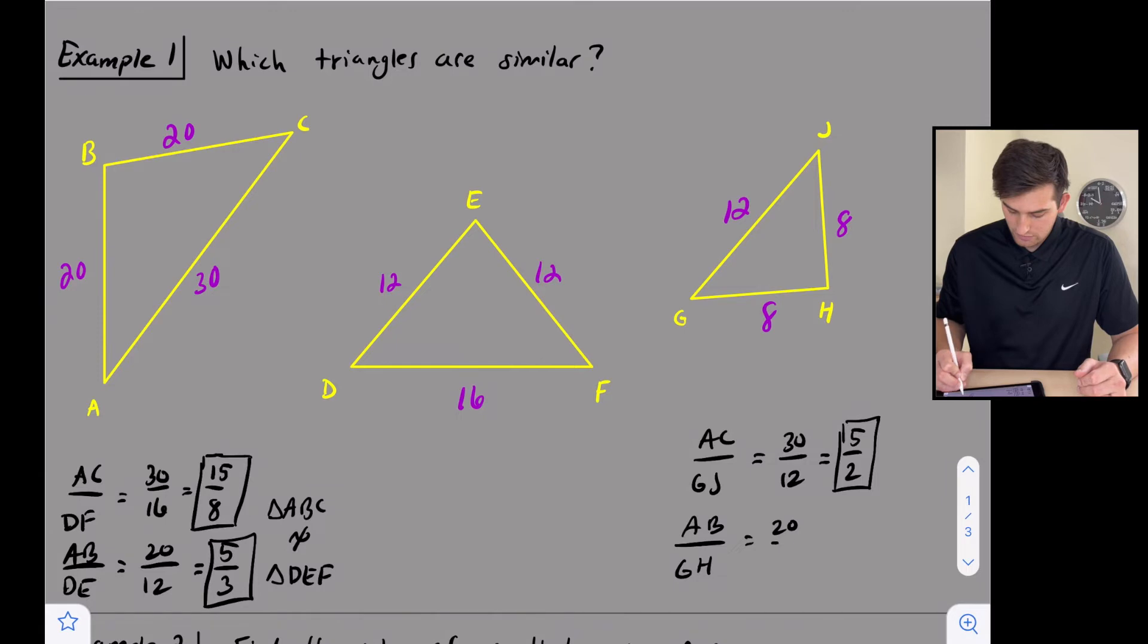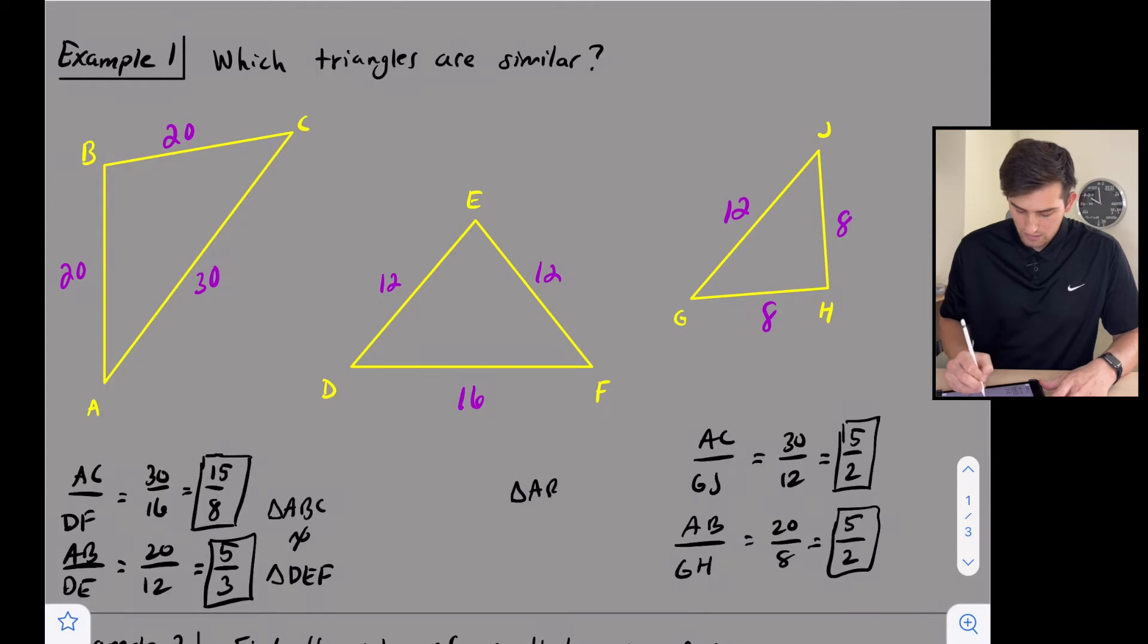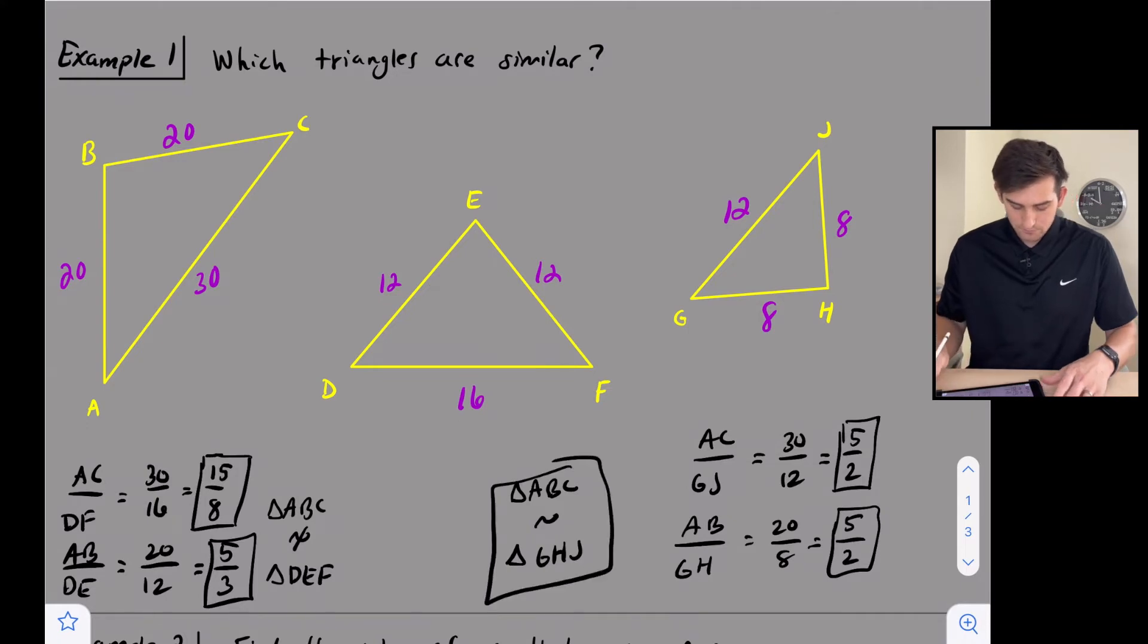So we get 20 over 8. And now for both of these, we can divide by 4. 20 divided by 4 is 5, 8 divided by 4 is 2. And so now look what we have - we have the same ratio. So we can say triangle ABC is similar to triangle GHJ. So we know that one is good. We know ABC is not similar to DEF. We know ABC is similar to GHJ.